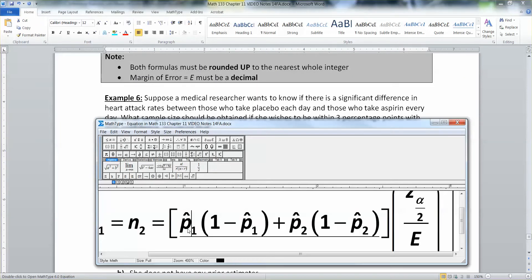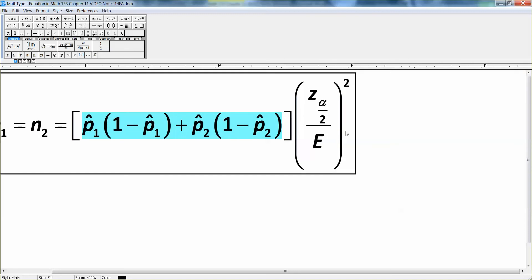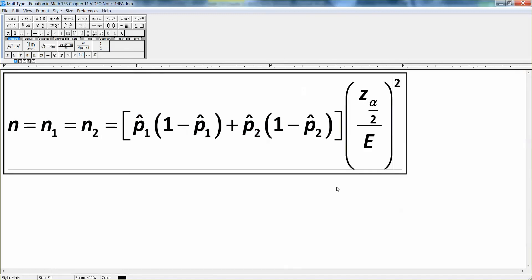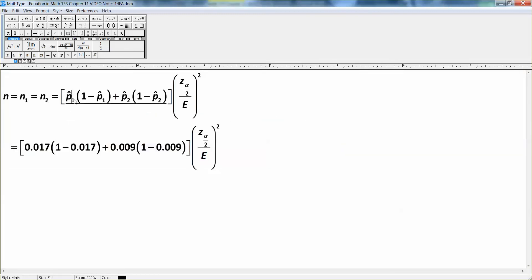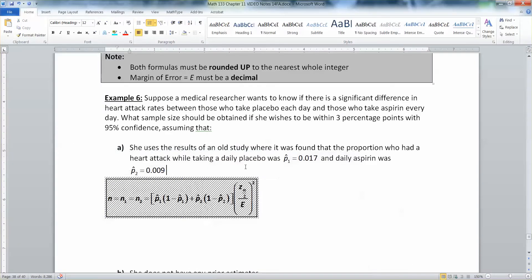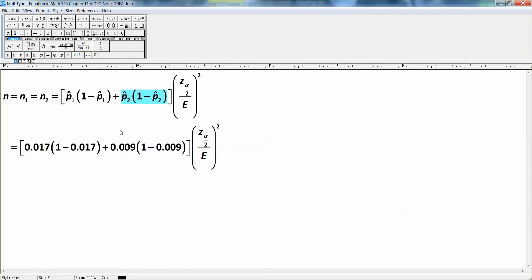Alright, so let's see here. What a mess. I'm going to make this so it can all fit on the screen. Alright, so we have p̂₁ times 1 minus p̂₁ plus p̂₂ times 1 minus p̂₂. And since in the problem they tell us p̂₁ is 0.017, p̂₂ is 0.009, that makes those two numbers kind of obvious. So let me pull those up, right? So right there.